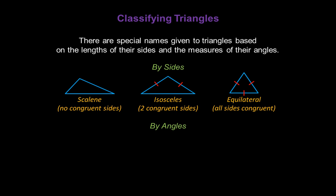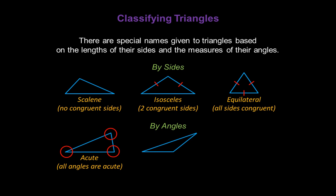Now let's look at the words used to classify triangles by their angles. This particular triangle is called an acute triangle because every one of the angles is acute. This particular triangle is an obtuse triangle. We have one angle that's greater than 90 degrees but less than 180, or obtuse.